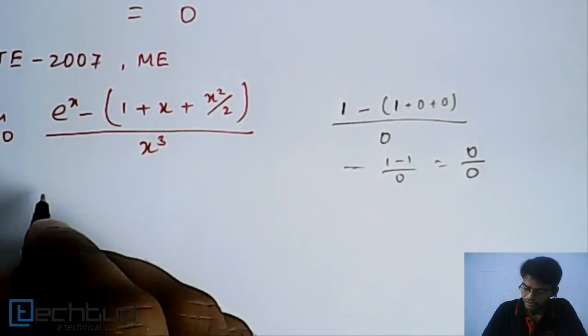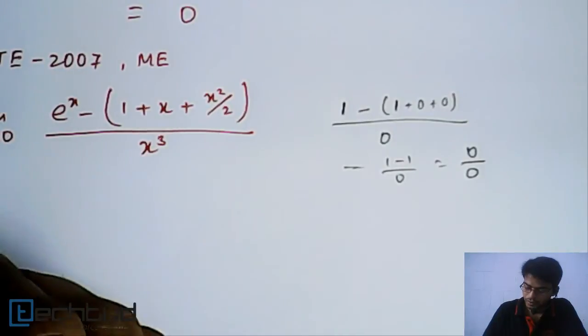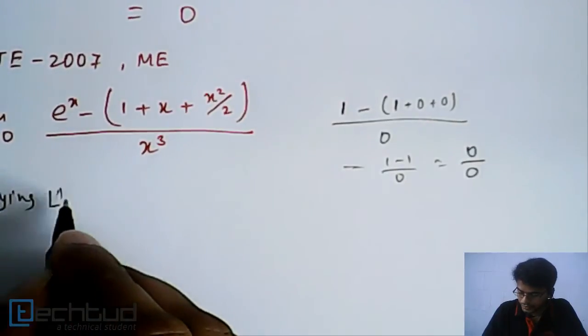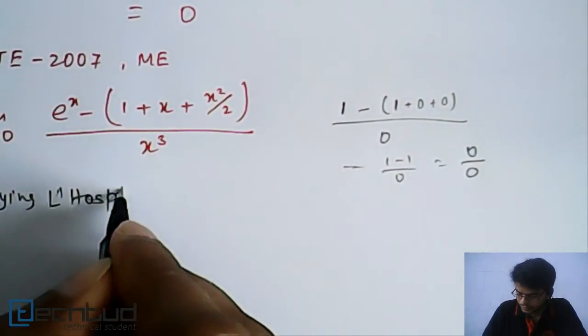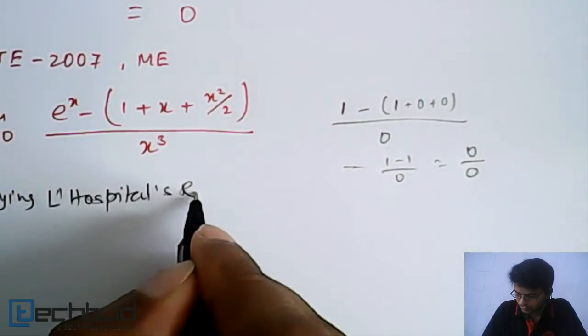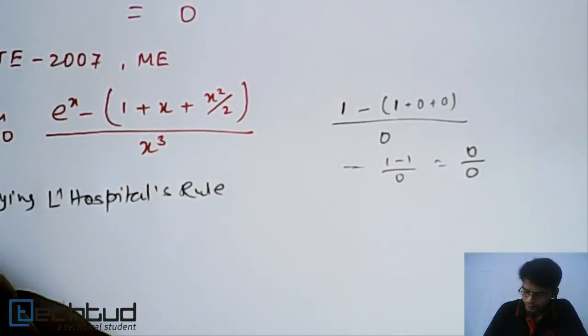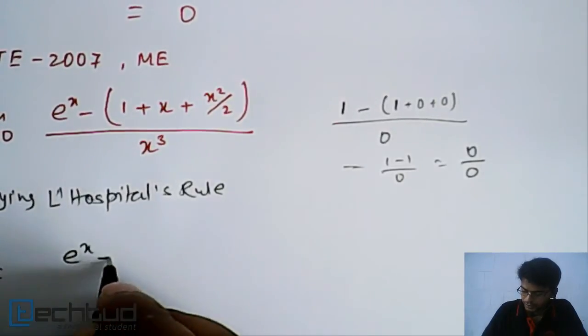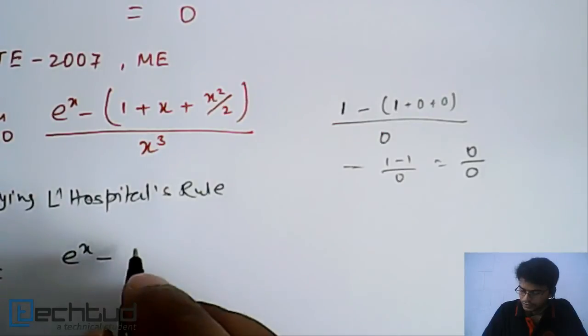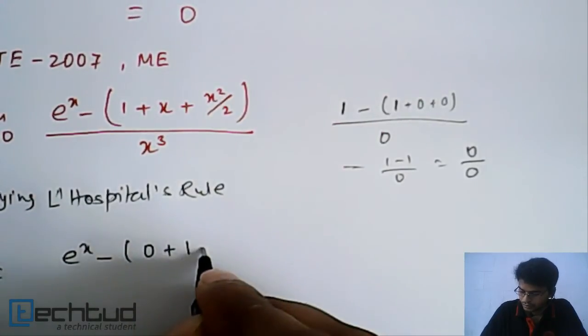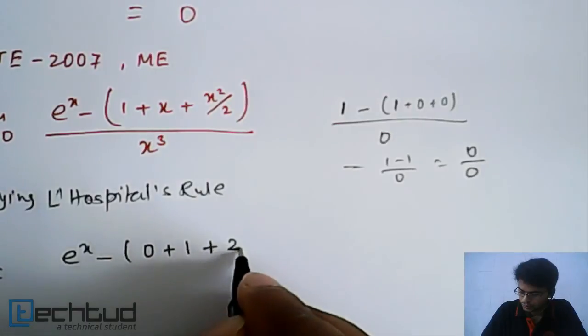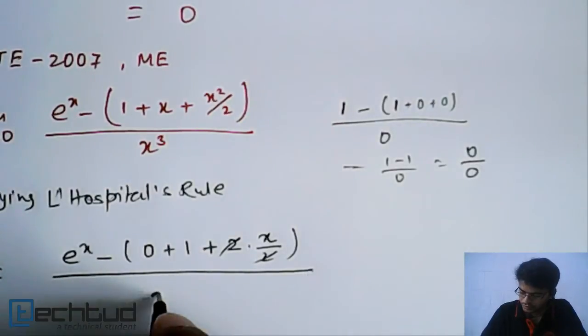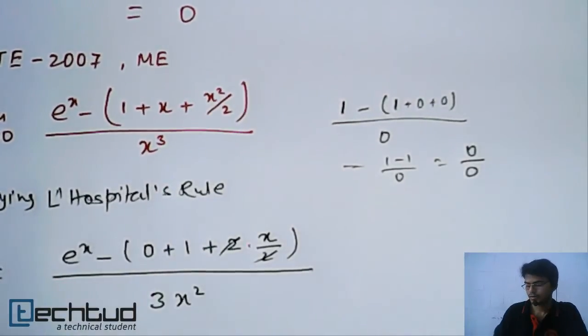Let's differentiate it. Applying L'Hospital's rule, this will be equal to e to the power x. So e to the power x minus, differentiation of 1 is equal to 0 plus 1 plus 2 into x upon 2, which is now 3x square.